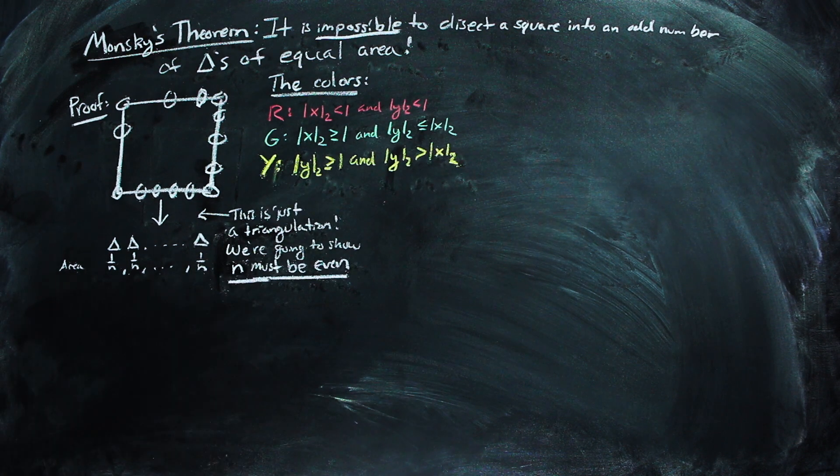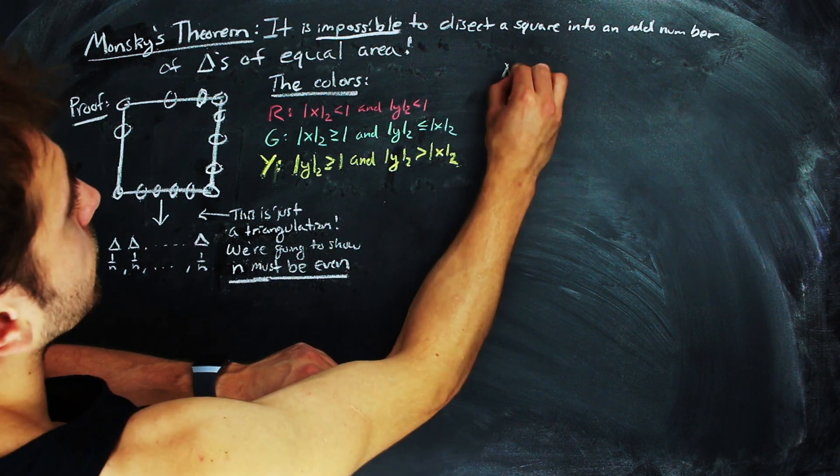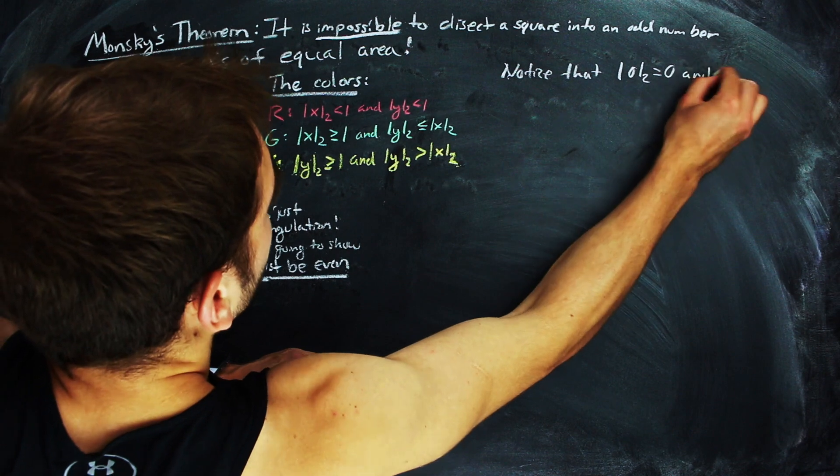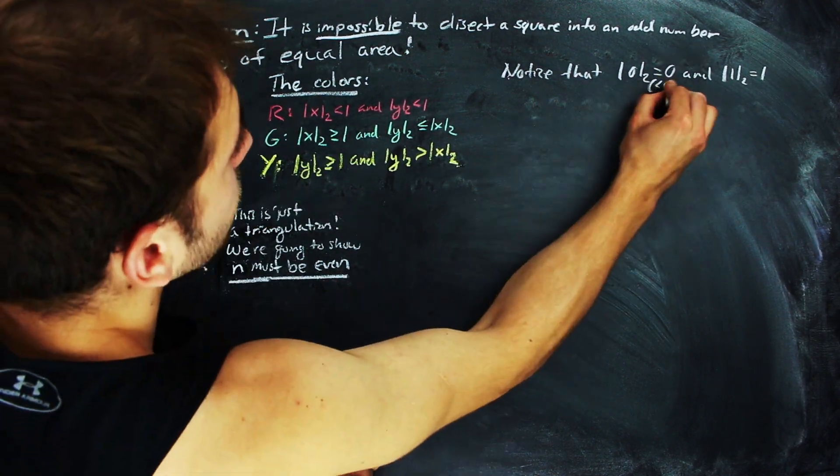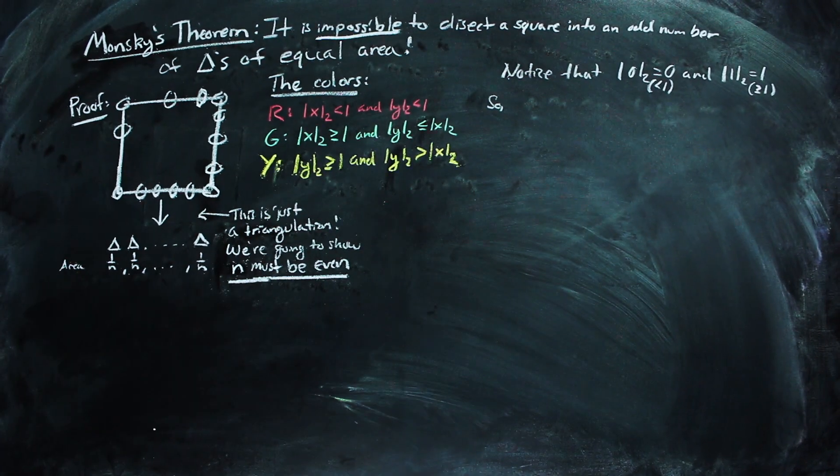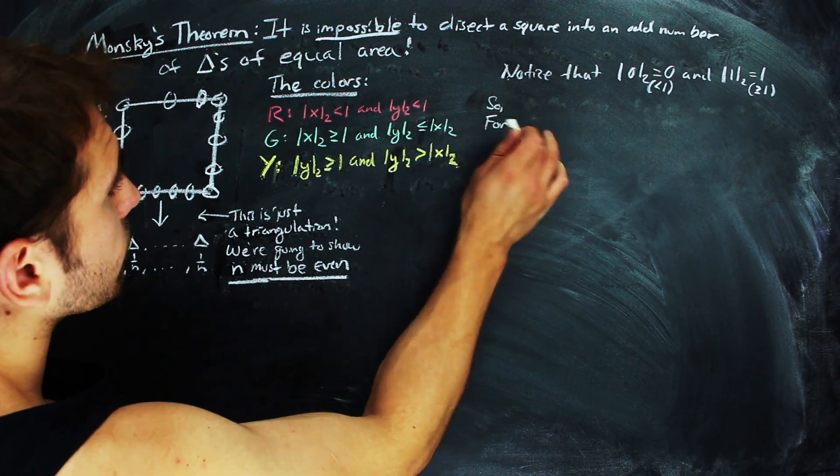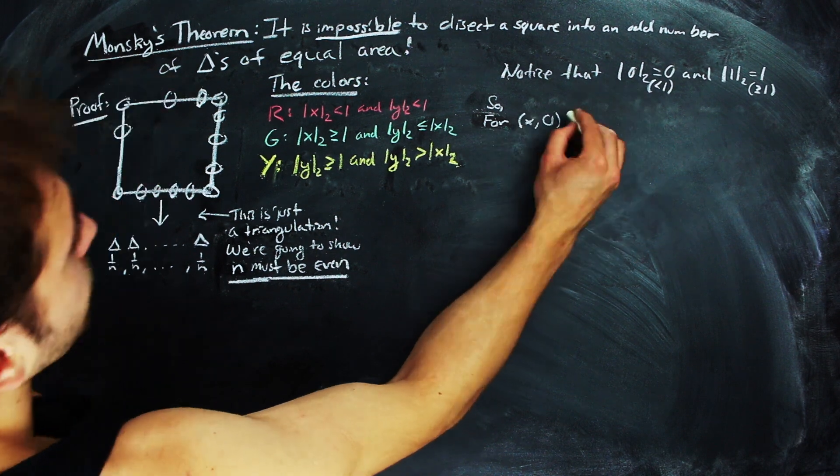We don't know what the interior of the triangulation looks like, but we do know that the corners of our square are vertices of the triangulation, and we can go ahead and color them according to our rules. So (0,0) will be red, (1,0) will be green, (0,1) will be yellow, and (1,1) will be yellow.